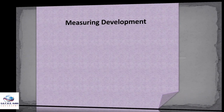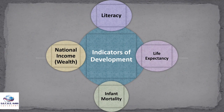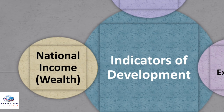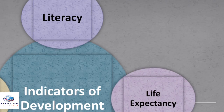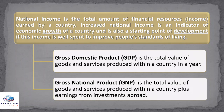Measuring development is a difficult task because MEDCs, which are well known to be rich, also have some people who are living in poverty. Likewise, LEDCs that are known to be poor countries have people who are actually rich and surprisingly living a better quality of life. The indicators of development include: national income or wealth of the country, literacy, life expectancy, and infant mortality.